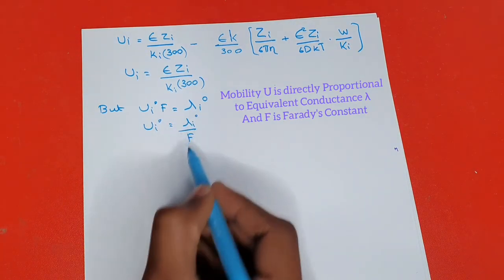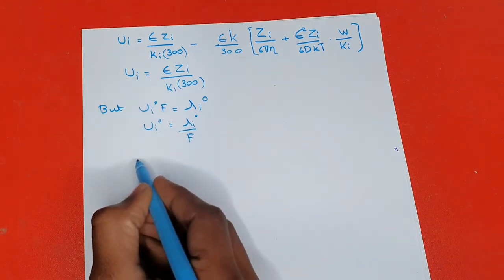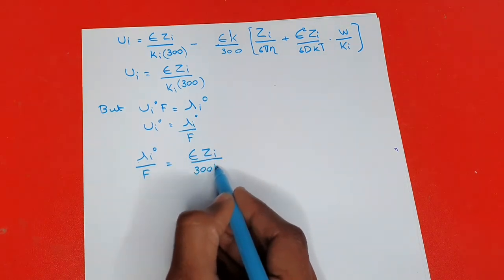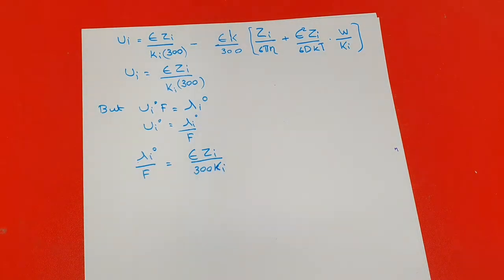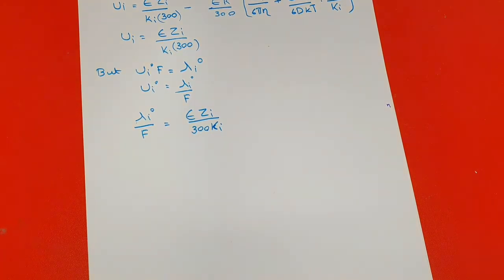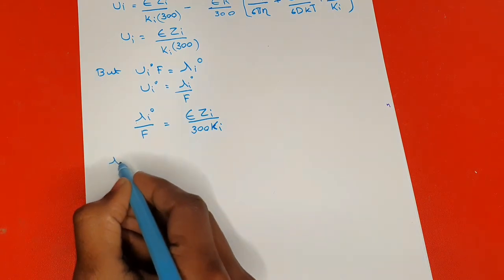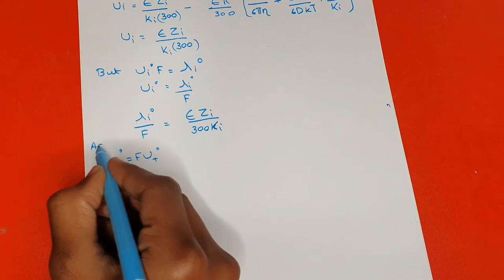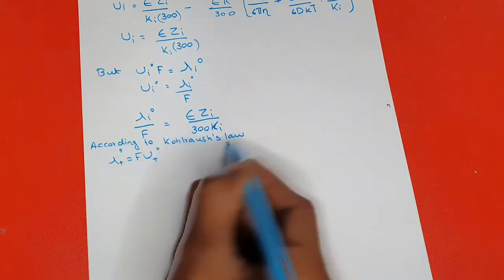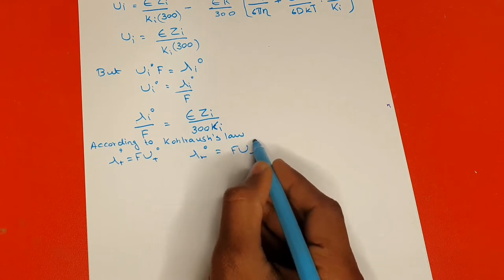So u_i⁰ = λ_i⁰ / f. Plugging this in: λ_i⁰ / f = e·z_i / (300·k_i). At infinite dilution the ions behave independently, and the ionic conductance can be written according to Kohlrausch's law: λ₊⁰ = f·u₊⁰ and λ₋⁰ = f·u₋⁰.